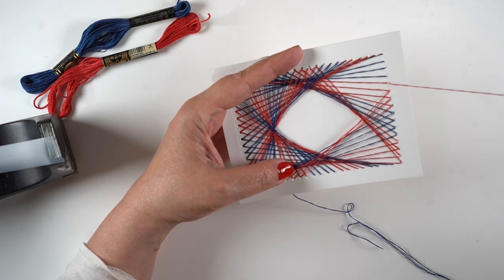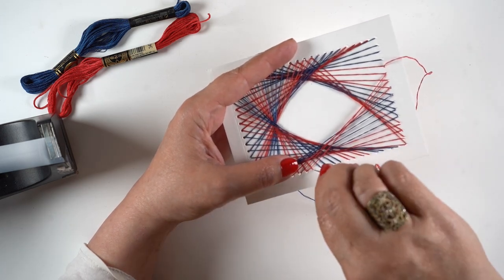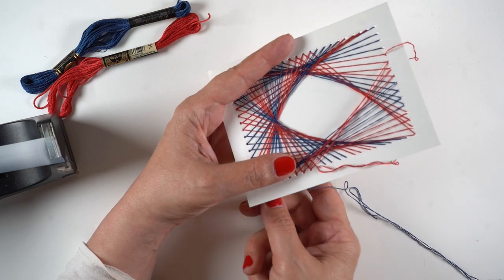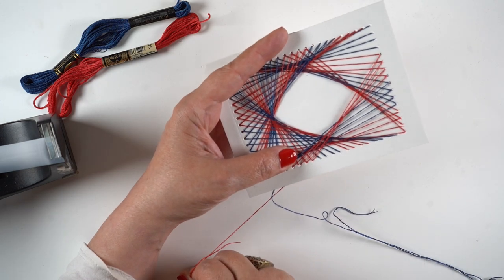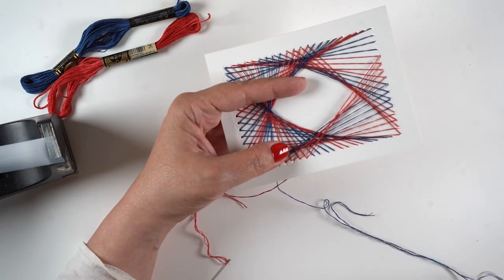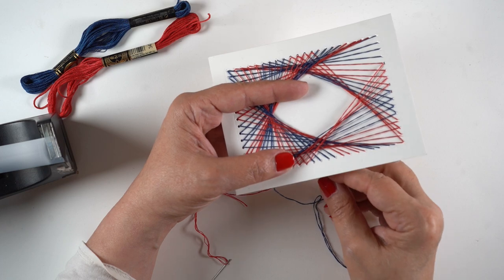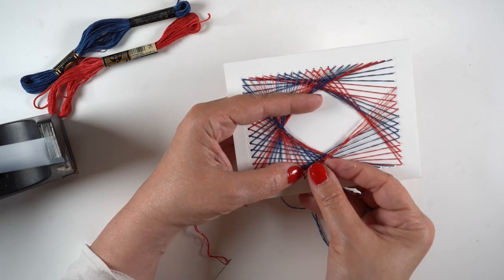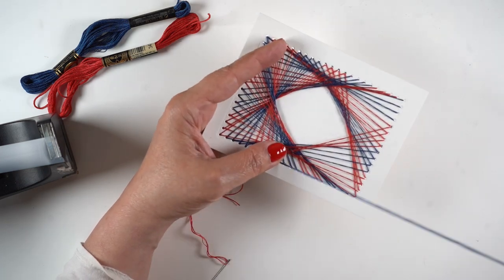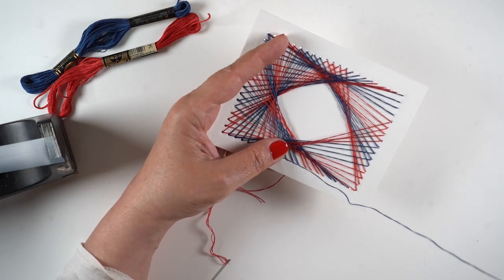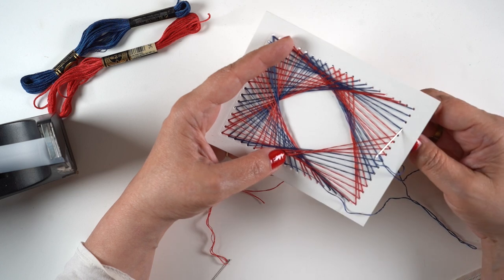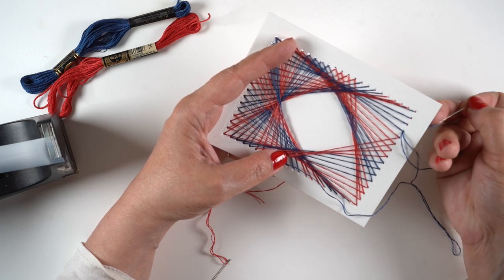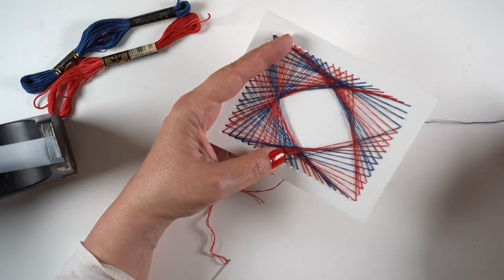Now if you wanted to do a third color on something like this, you want to pick a die that has a number divisible by three or find some way to make that math work out so that you're going to be able to change from one color to another without having to do a lot of cheating. Now some of them I noticed when I was counting them out, some of them have like 29 holes in them or 51 holes.